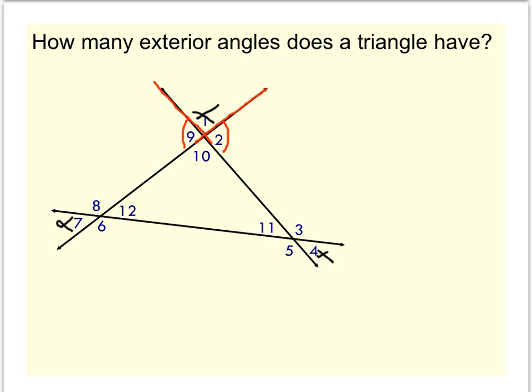So how many exterior angles does a triangle have? Well, 2 and 9, 8, 6, 3, and 5 are all exterior angles. So six of them.